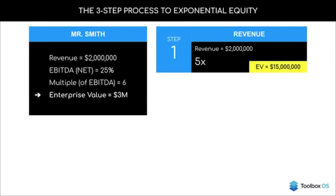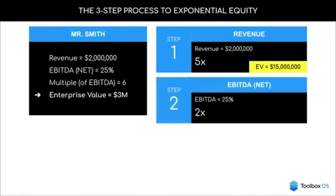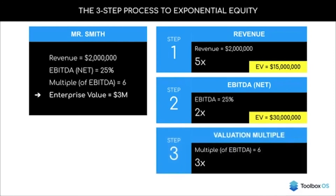His current enterprise value was $3 million, so 5x-ing — all things remaining equal — gives him a $15 million business. Now we look at EBITDA, the actual profitability. He thinks he can 2x it with the right technology, taking it from 25% to 50% — now he's got a $30 million business. Then we move to step three: the valuation multiple. Currently trading at 6x EBITDA, he thinks he can get it to 18x EBITDA — 3x the current multiple — giving him a $90 million business.